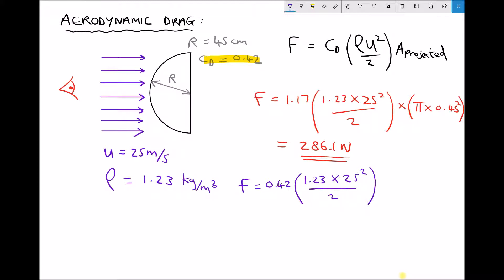The projected area when we look at this hemisphere is still the same. Looking in the direction of the wind, even at the curved surface, we still see a circle of radius 45 centimeters. So our area is still pi times 0.45 squared. Running this through the calculator, we get a drag force of 102.7 newtons.